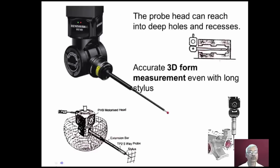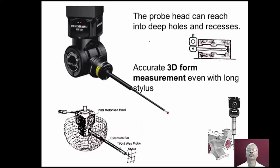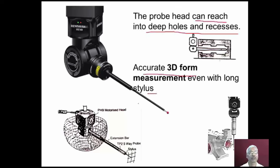With the use of extension bars, the probe head can reach into deep holes and recesses, and internal details of deep holes can be measured. An accurate 3D form measurement even with a long stylus is possible. By using extension bars, the measurement volume can be selected appropriately.